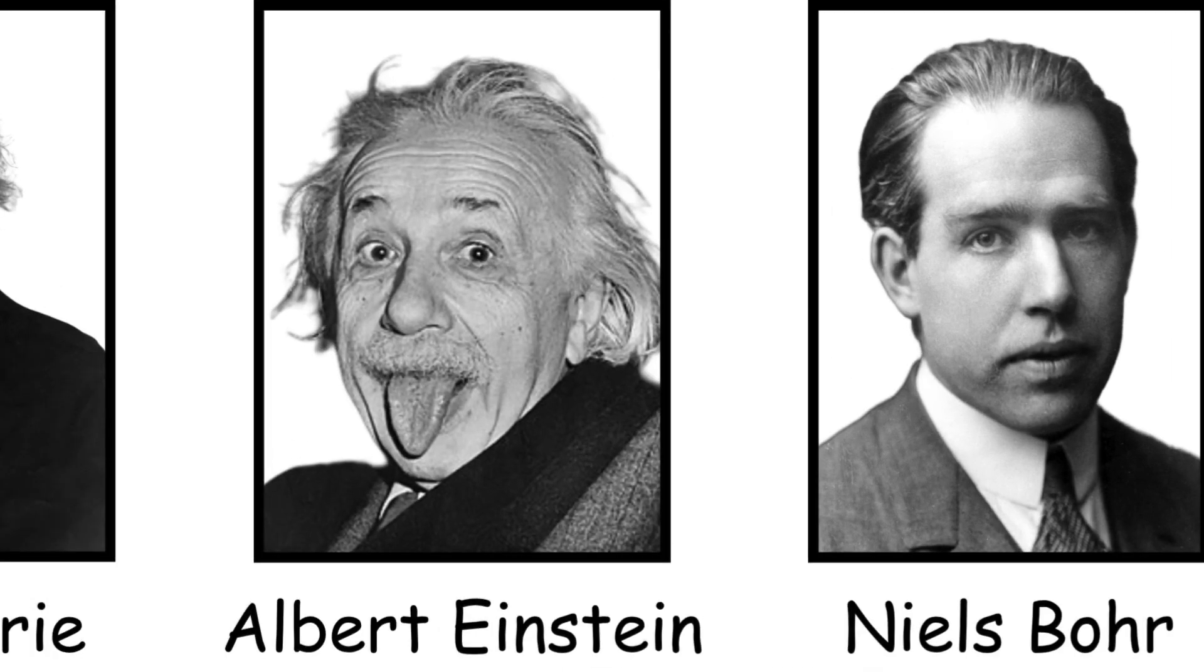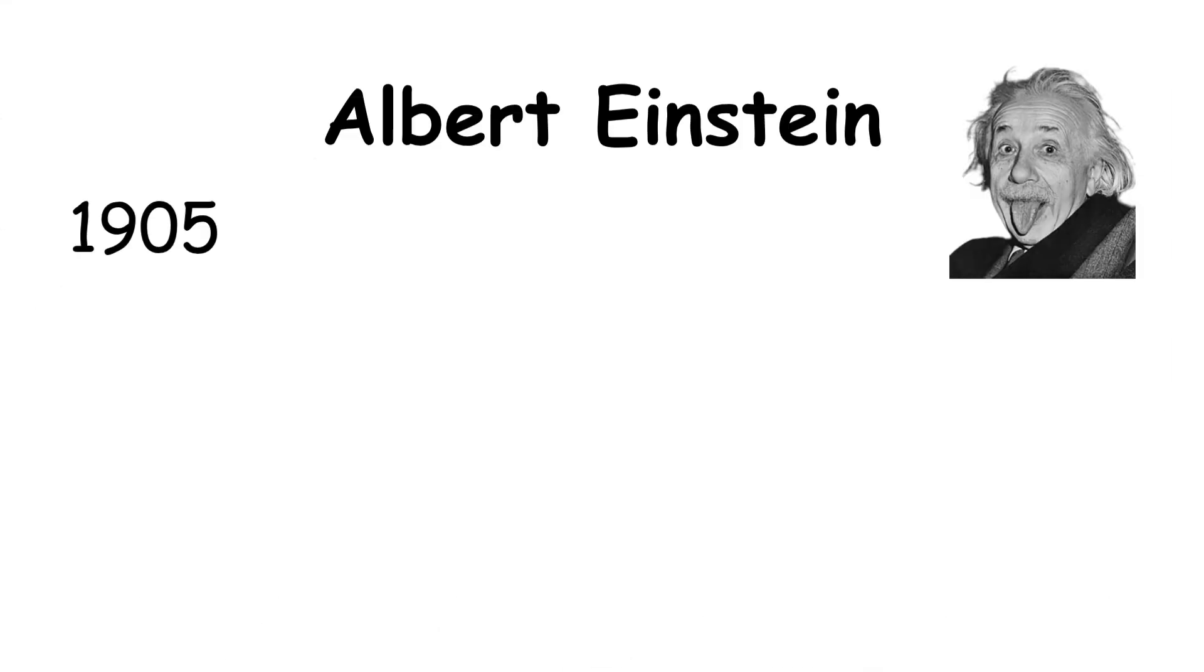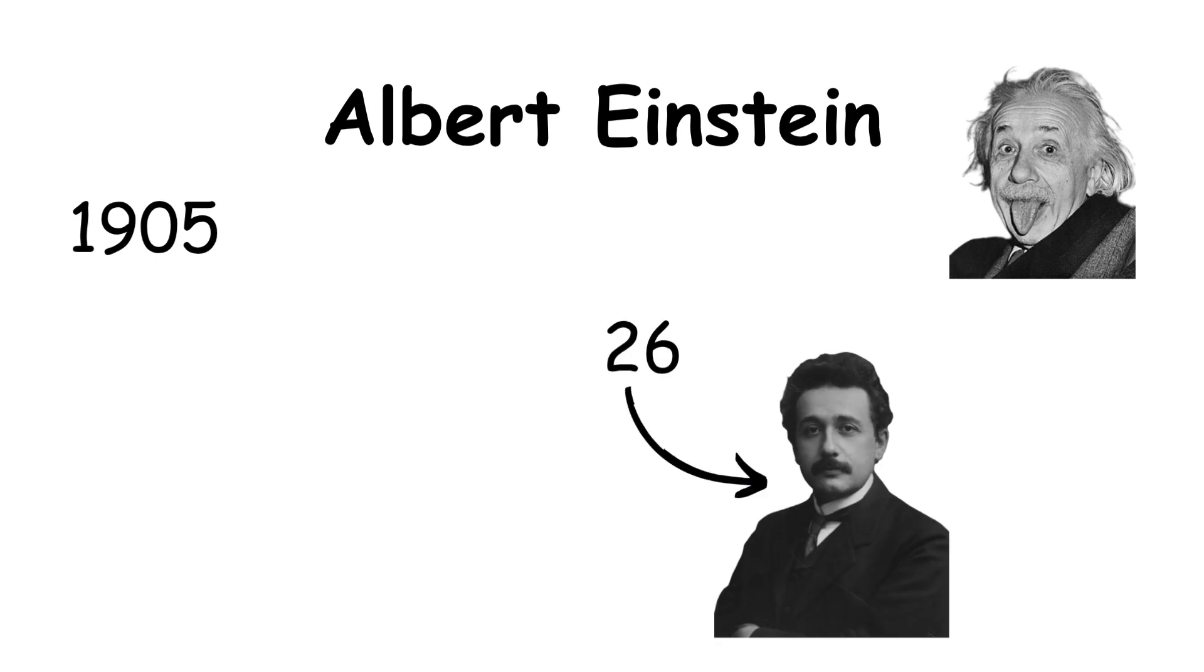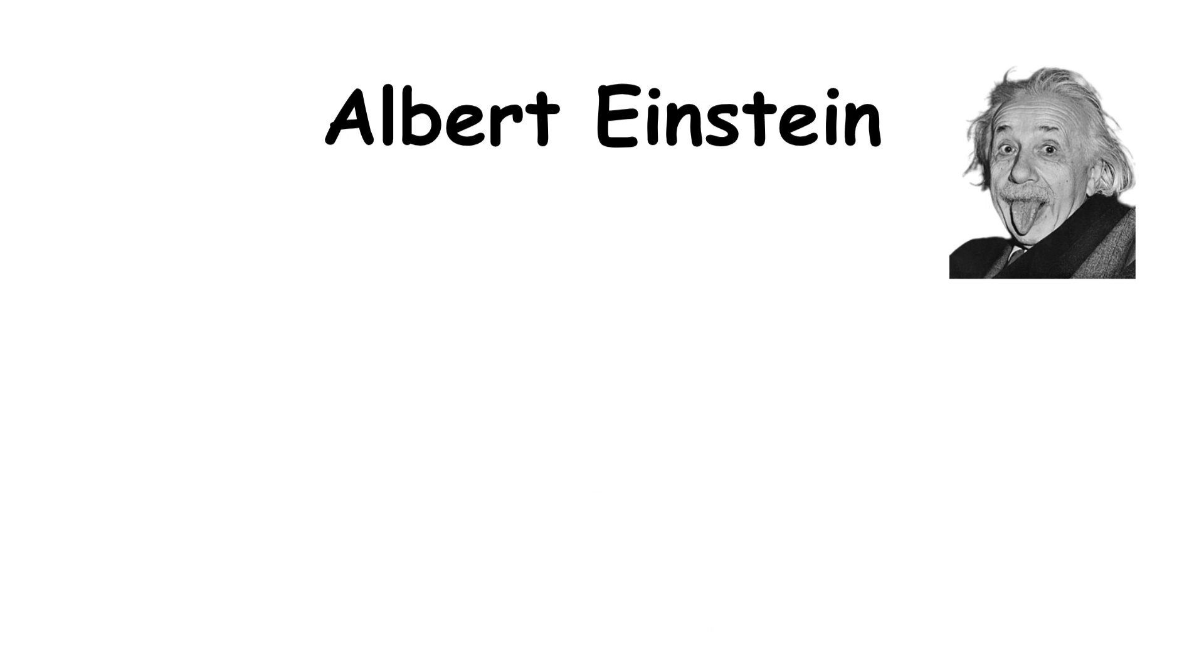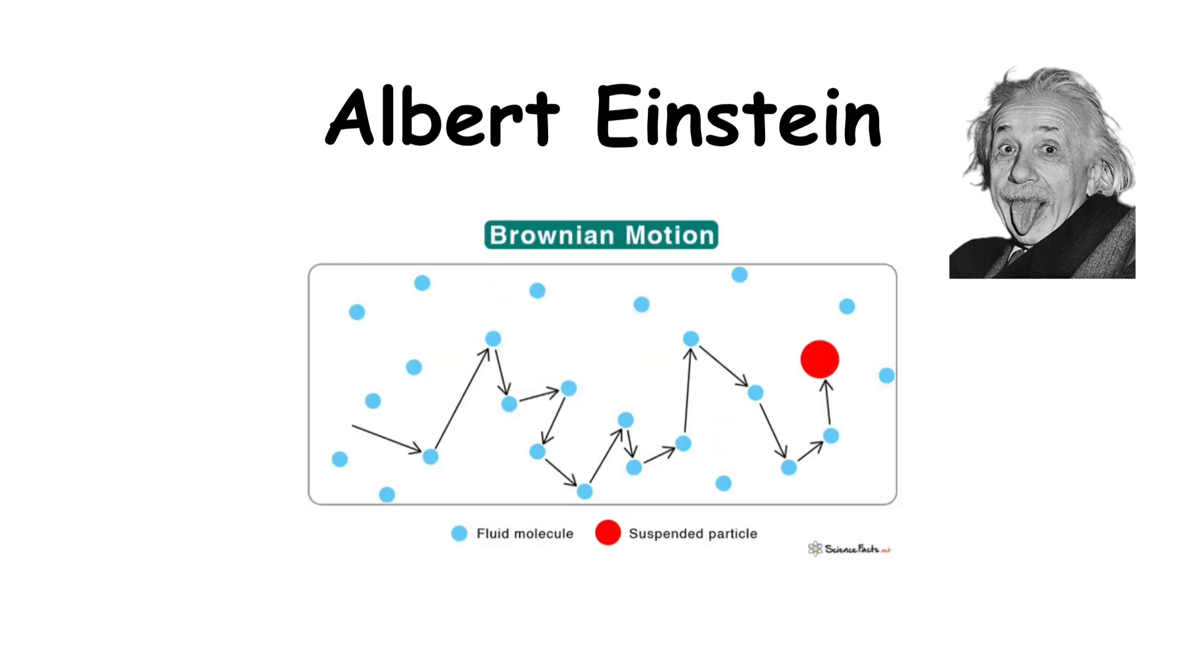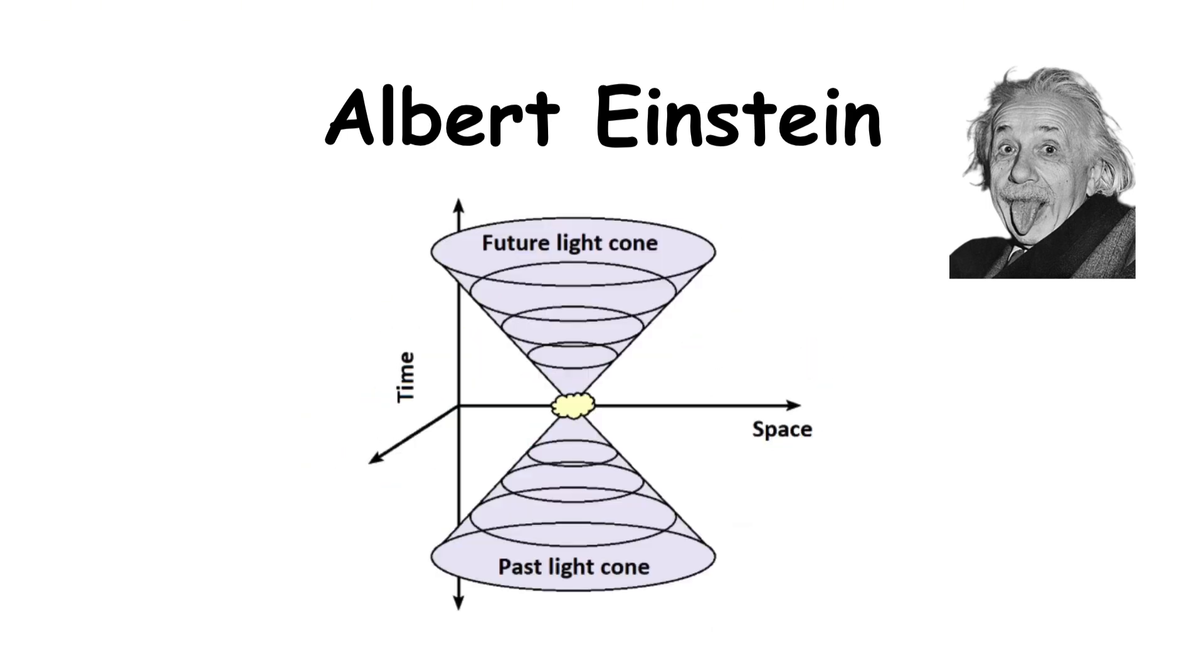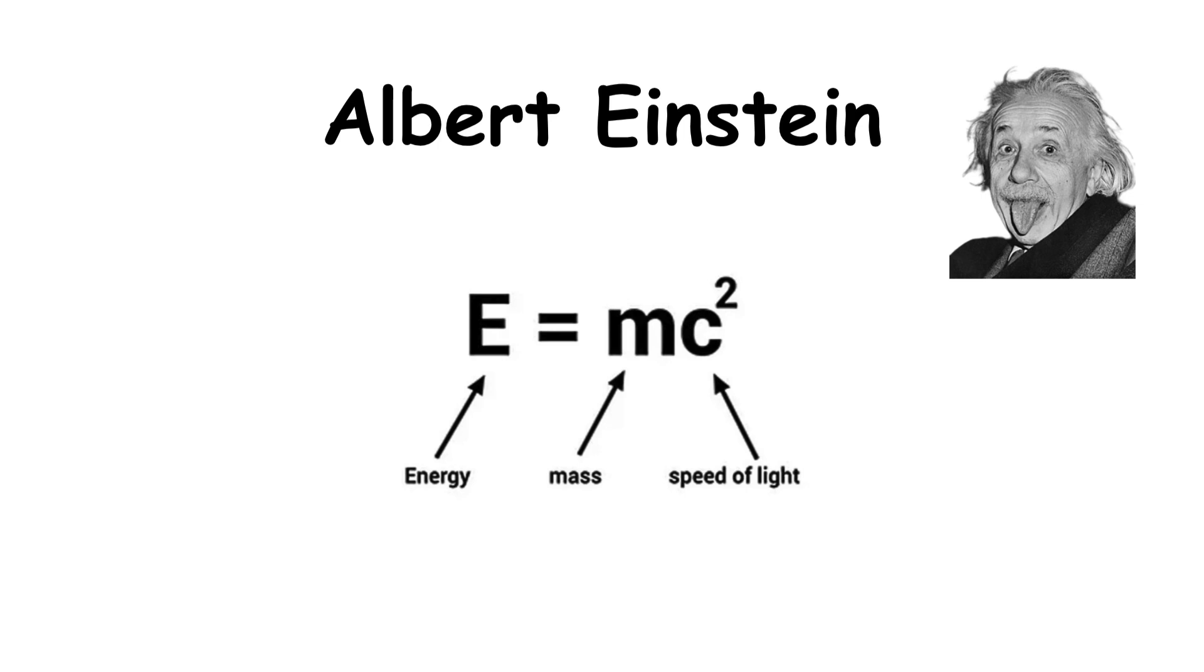Albert Einstein. In 1905, at age 26, he published four groundbreaking papers in a single year, covering the photoelectric effect, Brownian motion, special relativity, and mass energy equivalents, E equals mc squared.